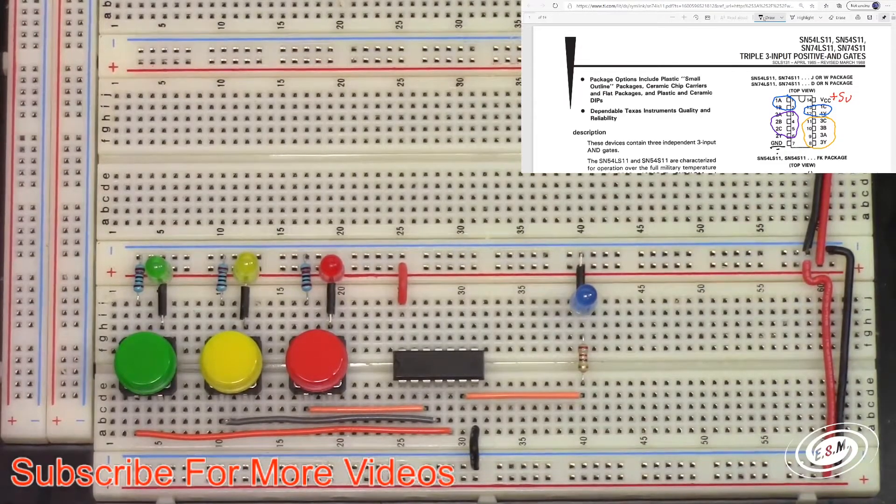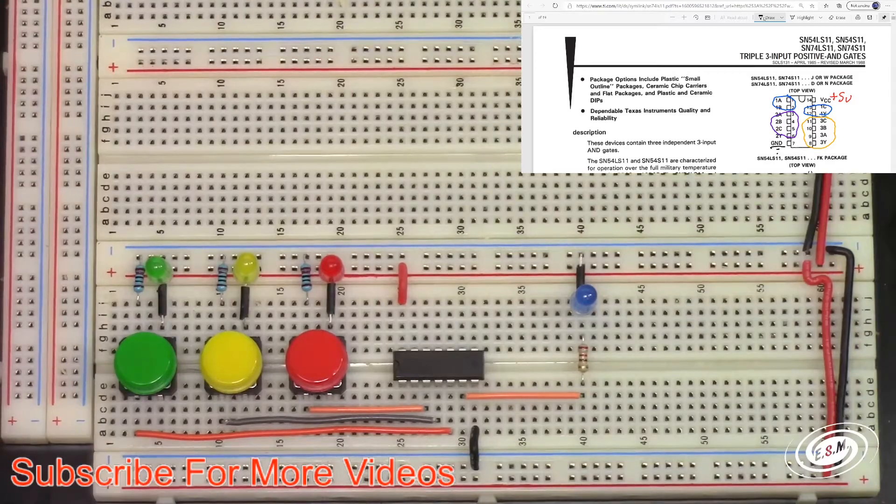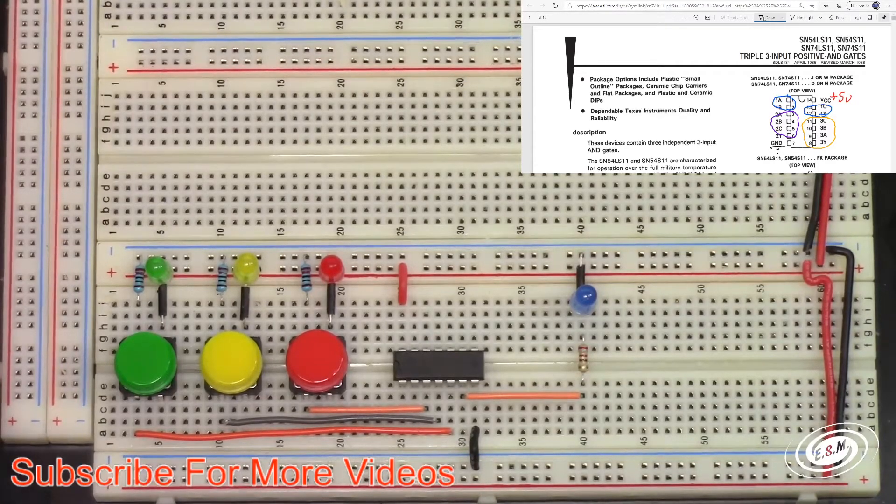Back to our circuit you can see the light is off and if I follow the truth table, let's get the truth table back up there.